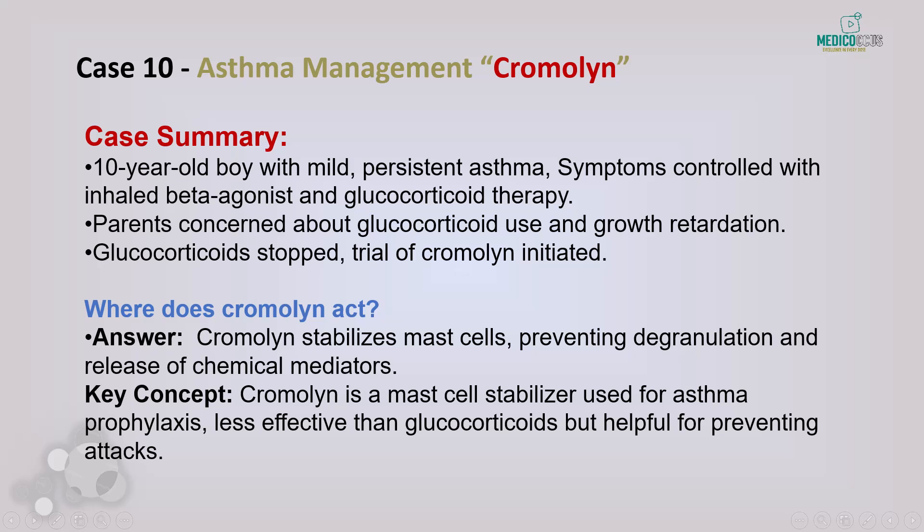Case 9: A 10-year-old boy with mild persistent asthma well-controlled on inhaled glucocorticoids and a beta agonist. Due to concerns about growth retardation from glucocorticoid use, his treatment was changed to cromolyn. Cromolyn is a mast cell stabilizer that works by inhibiting mast cell degranulation, preventing the release of histamine and leukotrienes that cause bronchoconstriction and inflammation. It is useful as a prophylactic agent to prevent asthma attacks — not for acute exacerbations — and can manage seasonal and exercise-induced asthma.